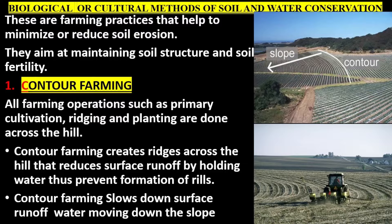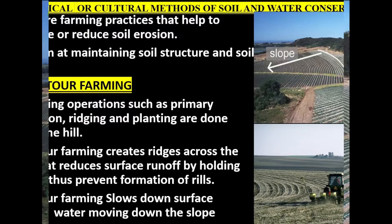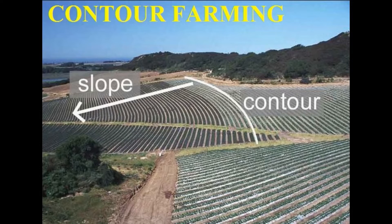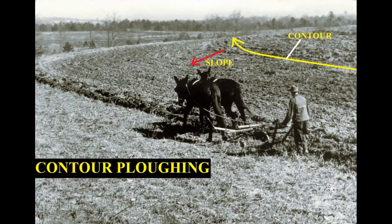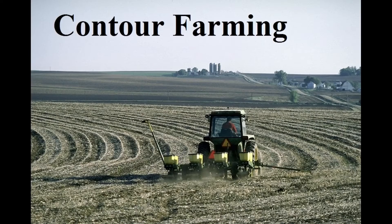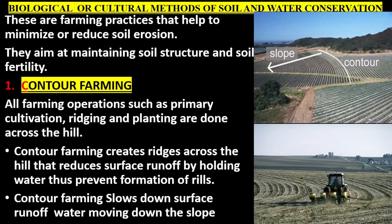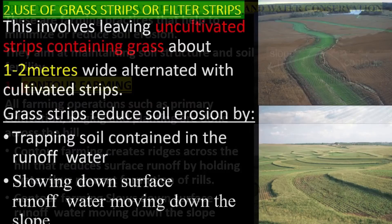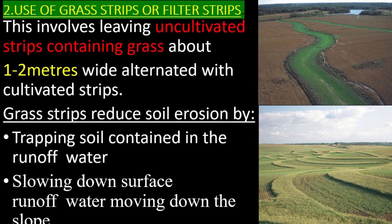Contour farming: all farming operations such as primary cultivation, ridging, and planting are done across the hill. Contour farming creates ridges across the hill that reduce surface runoff by holding water, thus preventing formation of rills. Contour farming slows down surface runoff water moving down the slope.